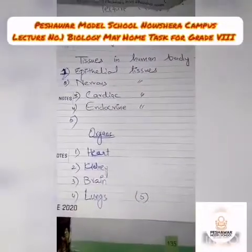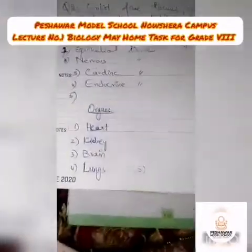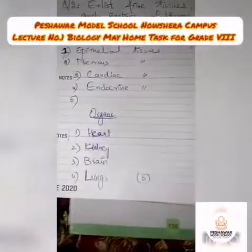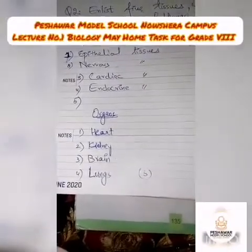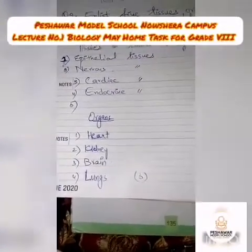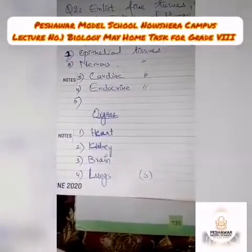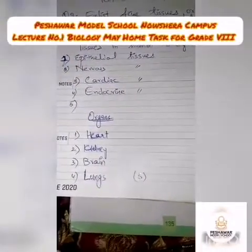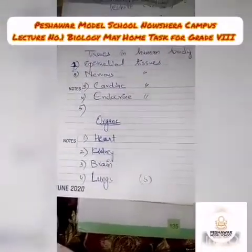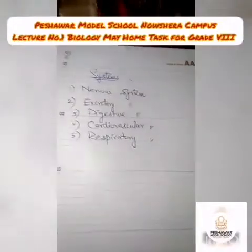Now, what are the organs present in the human body? There are a lot of organs. These are: heart, kidney, brain, and lungs. The fifth one I will leave for you to find out.